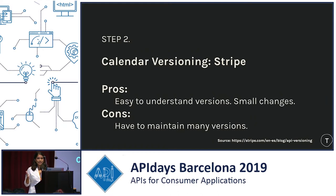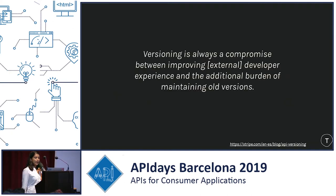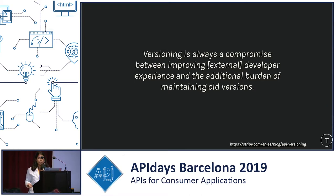One of the cons for the engineers at Stripe is that it means they have to maintain that many more versions. I really like this quote from the Stripe blog — it basically says the easier you make it for your developers, the harder it is for engineers at your organization to maintain different versions of the same code. Stripe actually maintains all versions since the beginning of time — this can be over 100 versions of the same code. Figuring out how to resolve that internally is actually pretty tricky, which is what I'll start talking about now.